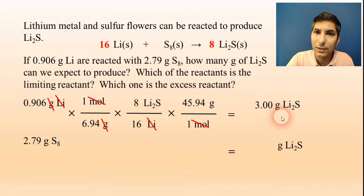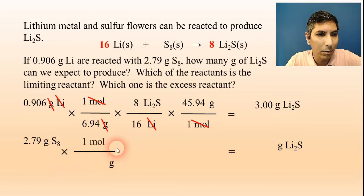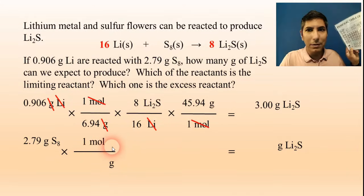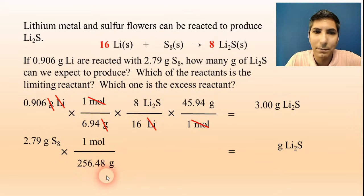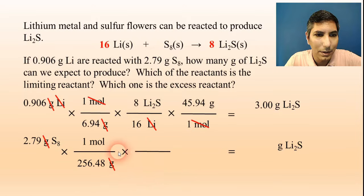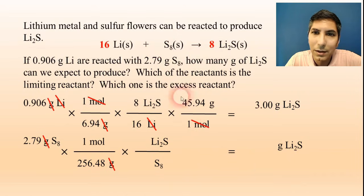We have to do this process again to get the smaller of the two answers. Starting with 2.79 grams of sulfur, step one is to convert to moles: grams on the bottom, one mole on top. According to the periodic table, one mole of S8 is about 256.48 grams. Grams cancel. Step two is the mole ratio: S8 on the bottom, converting to lithium sulfide on top. Looking at the coefficients, this is an 8-to-1 mole ratio.